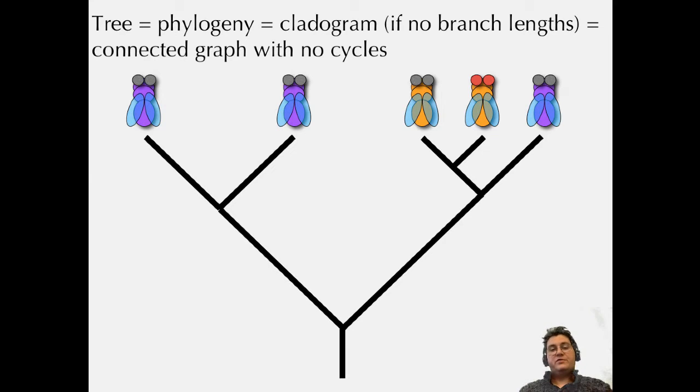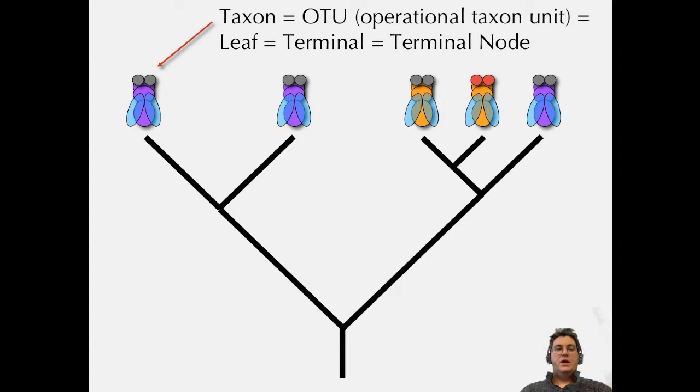The term for this structure - I've been saying tree a lot - we also call it a phylogeny, thus phylometh. A cladogram if no branch lengths, and for mathematicians, a connected graph with no cycles. A taxon is also known as an OTU or operational taxonomic unit, also known as a leaf, terminal, or terminal node.